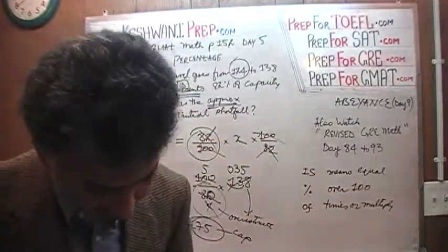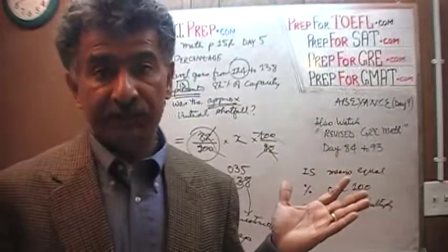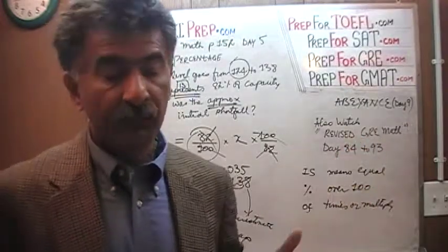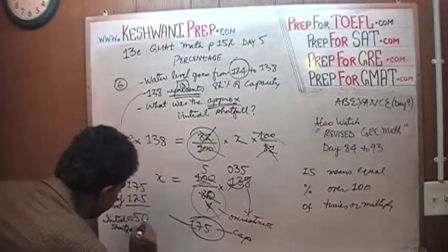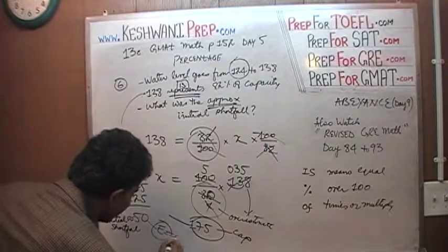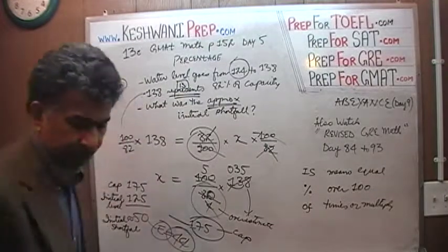Let's look at the answer choices. The only answer choice that is little less than 50 is 44. That's your answer. The answer is E, which is 44. That's it. We're done.